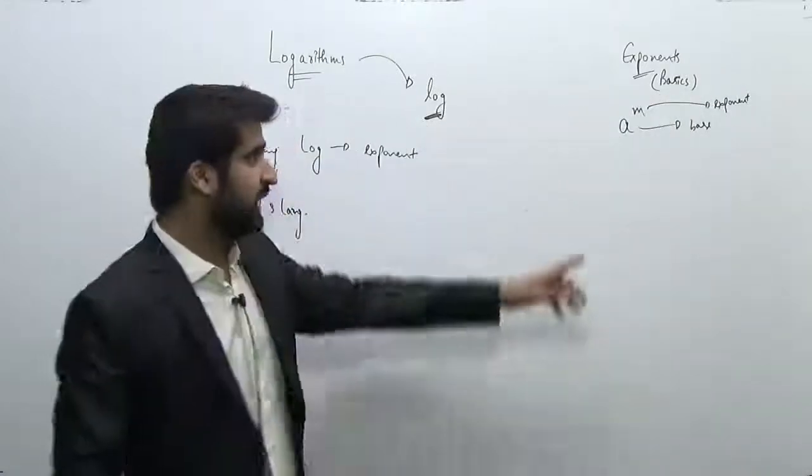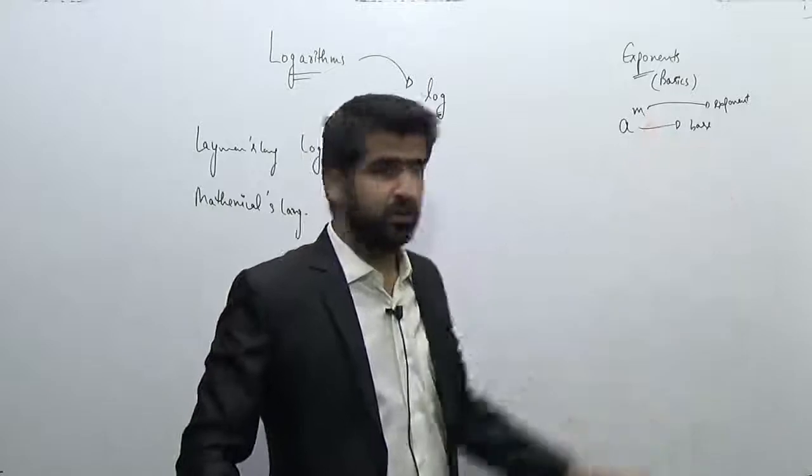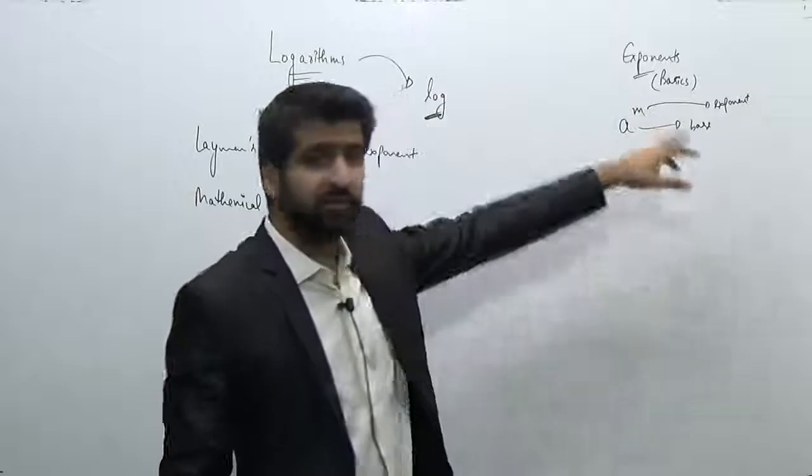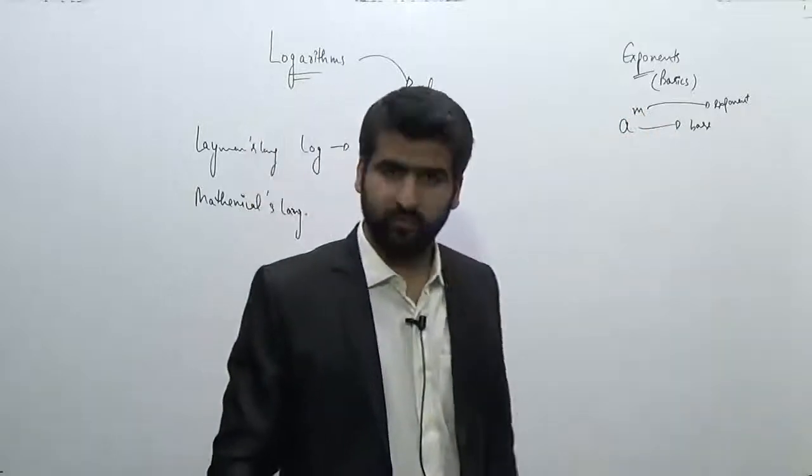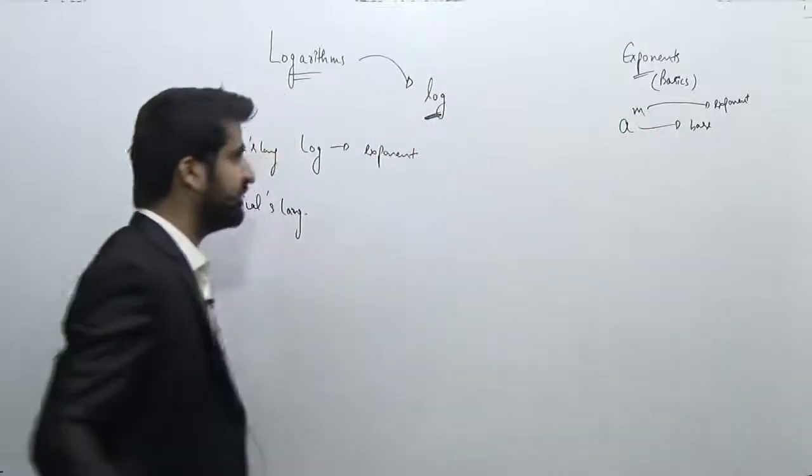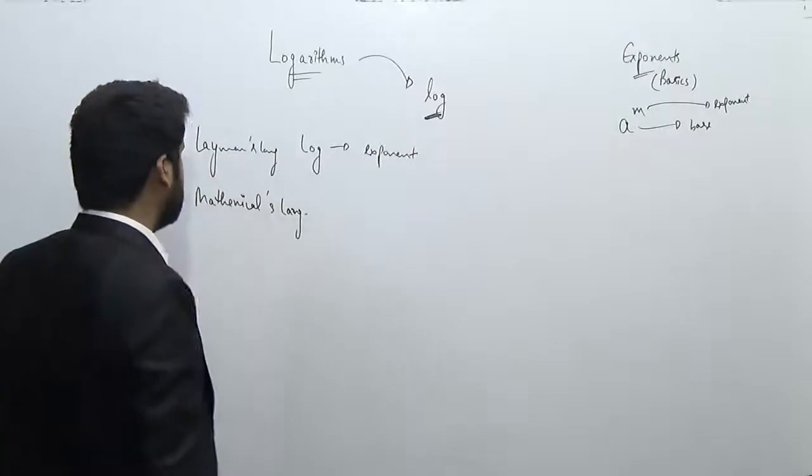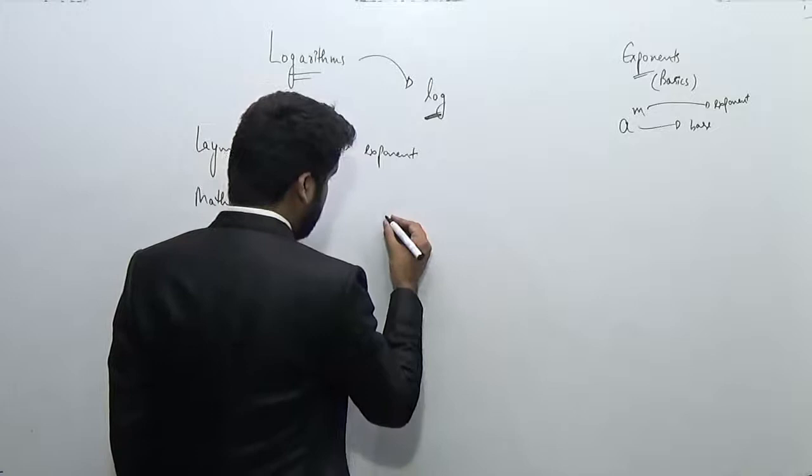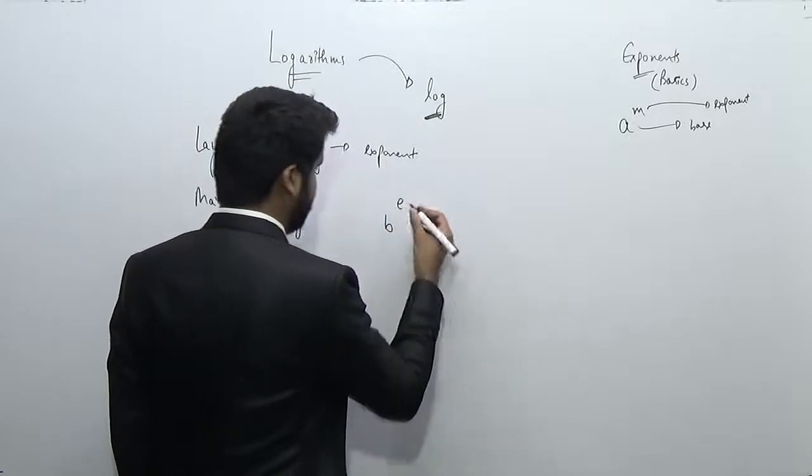And how many times this is getting multiplied was known as the exponent. So these two terms must be pretty much clear to you: what is base and what is the exponent. So the number which is getting multiplied is called the base, and the number of times it's getting multiplied is called the exponent.